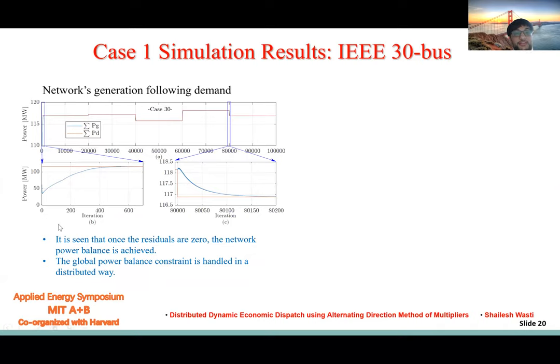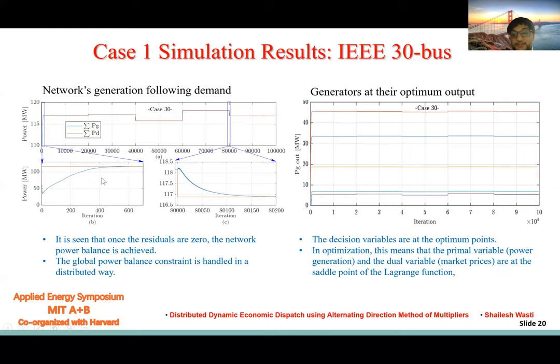Here what we see is the generation is following the demand. Once the residuals are zero, then the network's power balance is ensured. This is the case of the primal and dual to be the saddle point of the Lagrangian function. When these conditions are met, all the generators are at their optimum point, or we say the decision variables are at the optimum point.